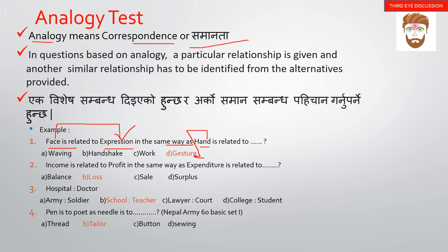The second example: income is related to profit, and expenditure is related to what? The answer is loss. Third example: hospital is to doctor — we find the relation with the doctor.